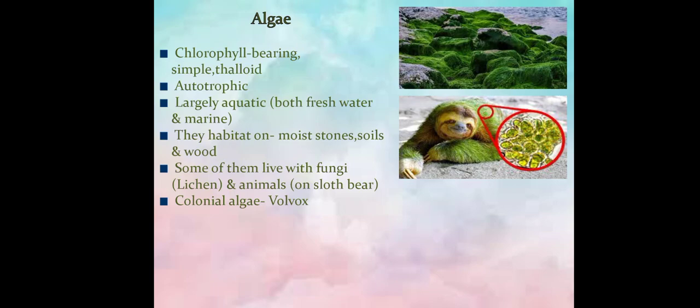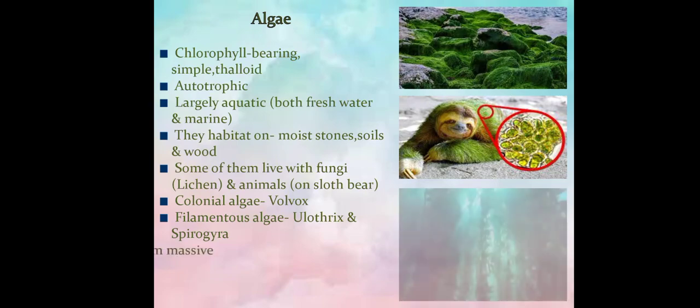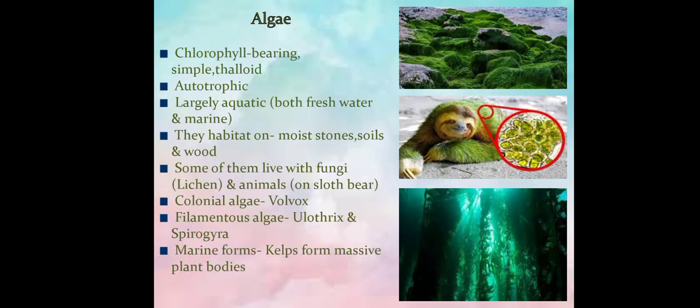Some colonial algae are also found, they are volvox. Many volvox cells join together and make a colony. Filamentous forms also found like Ulothrix and Spirogyra. Some are marine like kelps, they form huge massive structures, some of them as tall as 100 meters.